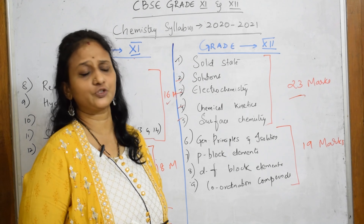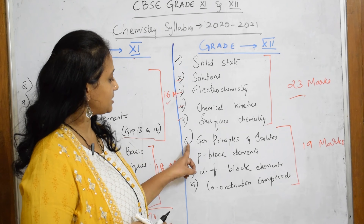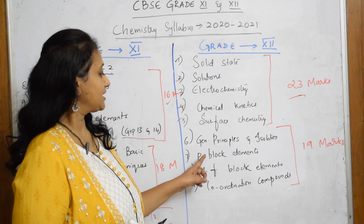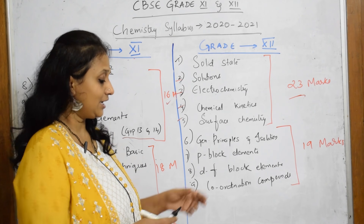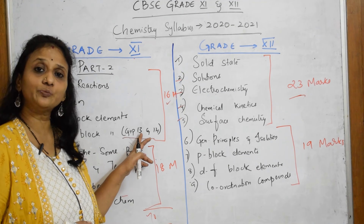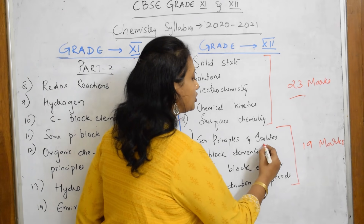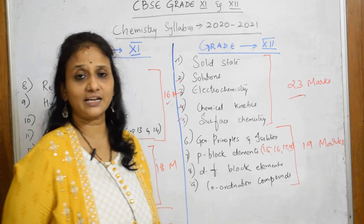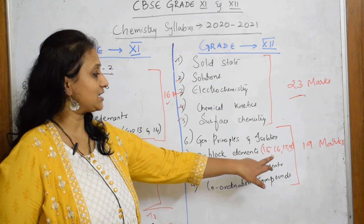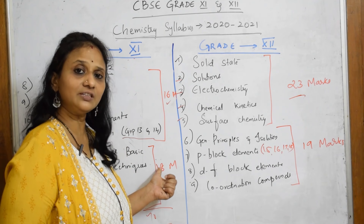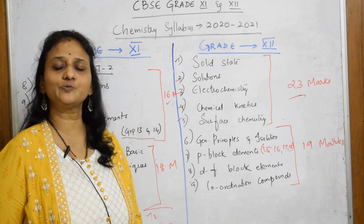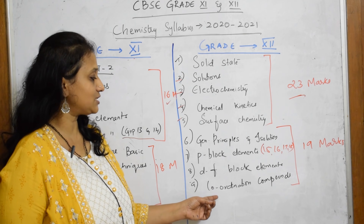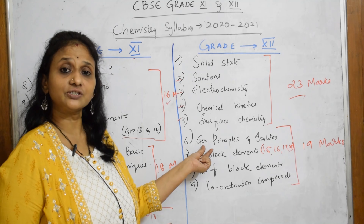Physical chemistry carries 23 marks, with maximum numericals and derivations included, and very few definition-based questions. After that, chapter six is 'General Principles and Processes of Isolation' — essentially the metallurgy chapter. Next is P-Block Elements: in grade 11 you studied groups 13 and 14, while in grade 12 you will study groups 15, 16, 17, and 18. Last year group 15 was in grade 11, but now groups 15 to 18 are all in grade 12.